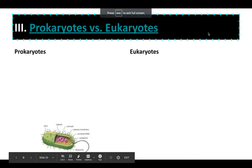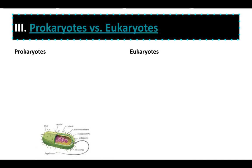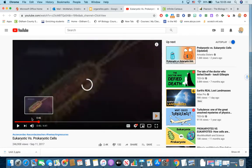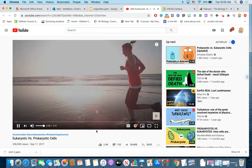All right, guys, picking up in the last section of our notes here, we're going to talk about prokaryotes and eukaryotes. So these are organisms that either have prokaryotic cells or eukaryotic cells. And we're going to start with this video. All you have to do is watch while it plays a nice little intro video between the two different cell types.